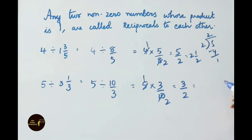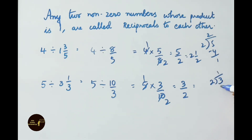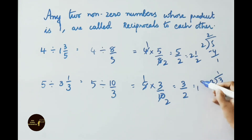This can be simplified by doing the division with 2. 2 × 1 = 2, 3 minus 2 = 1. So write down 1 and 1/2 is the answer.